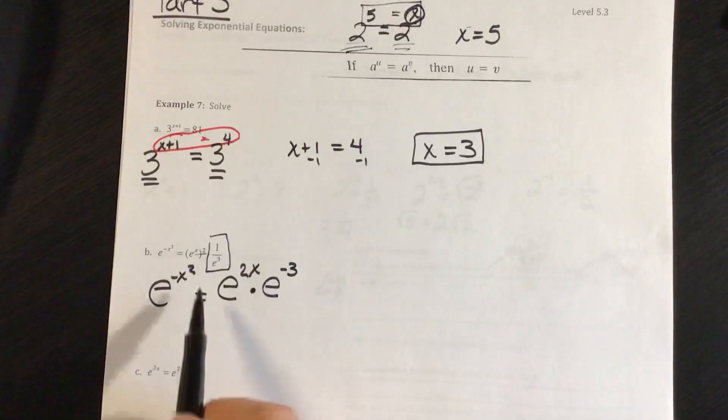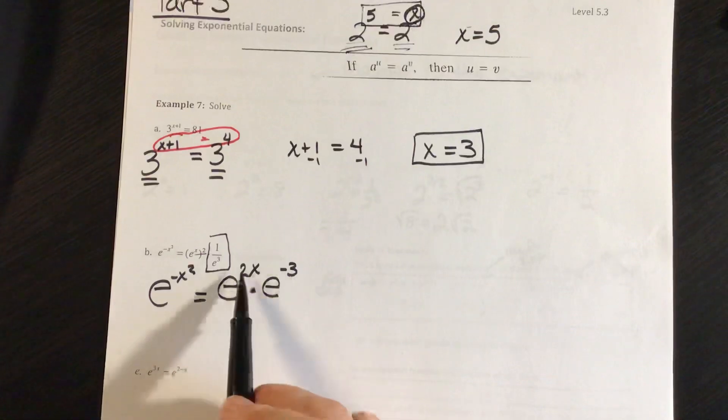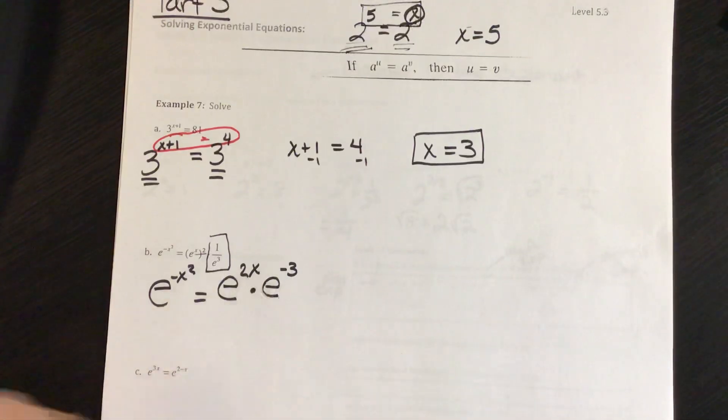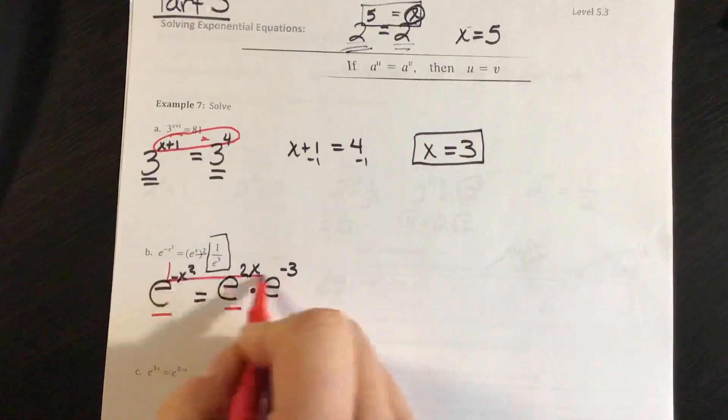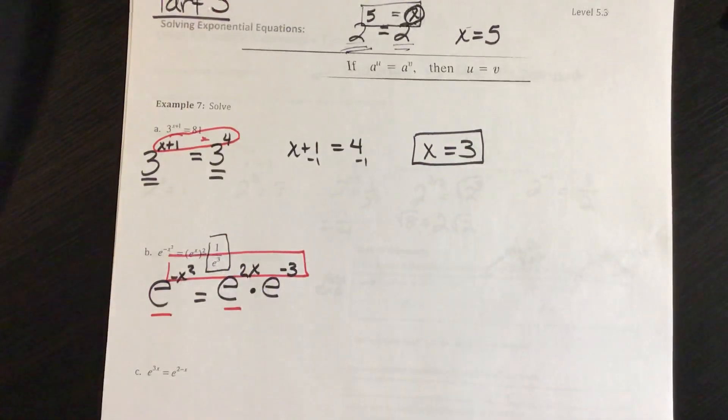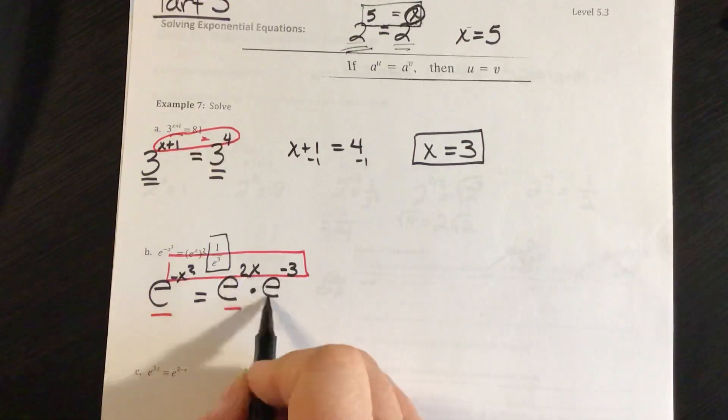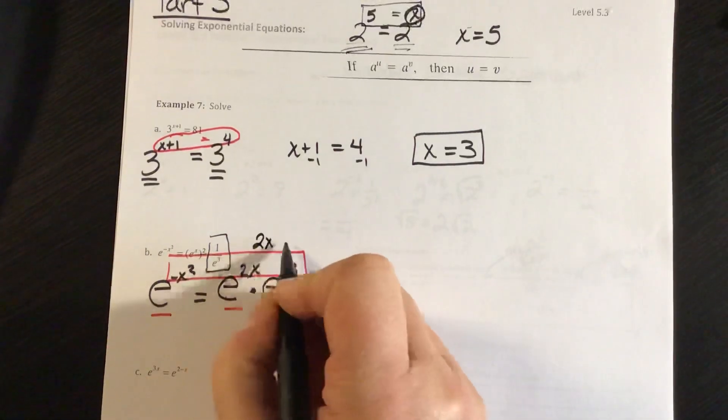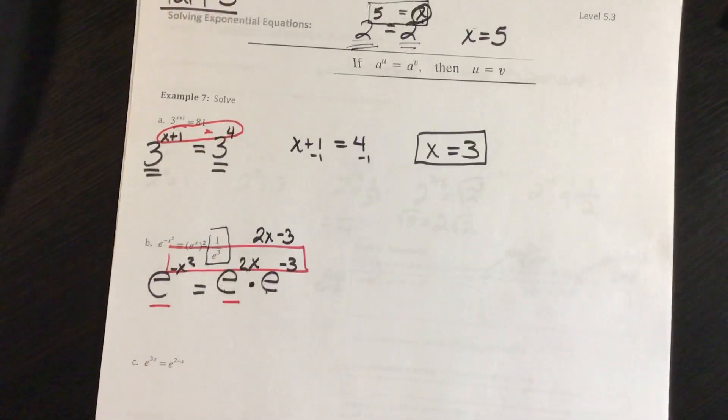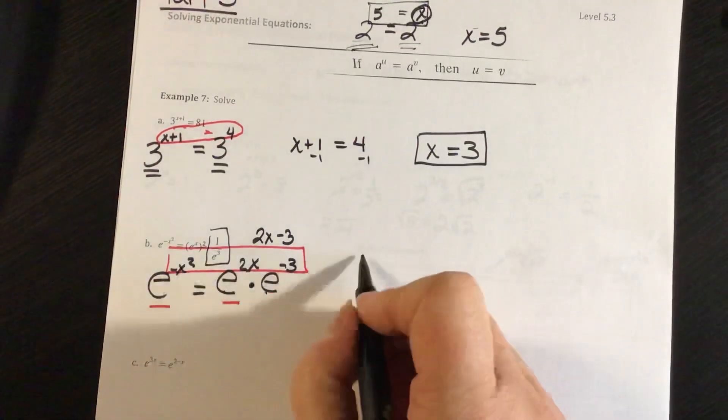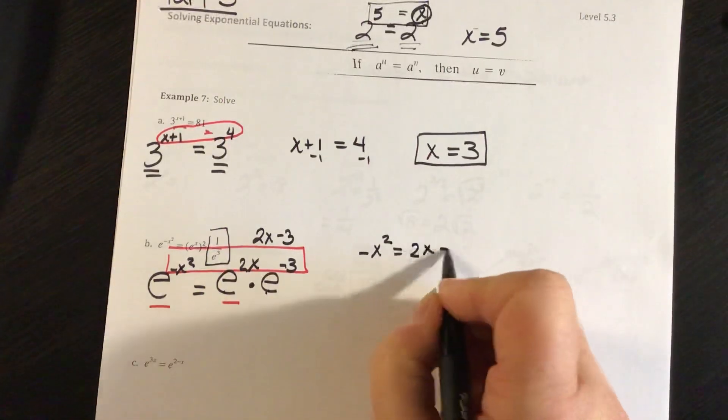All right, so here I have e to the negative x squared. And over here, I have e to the 2x times e to the negative 3. Both of my bases are e. So my exponents are going to equal. And if I combine these, remember, if I have the same base, I add and subtract exponents. So this is really 2x minus 3. So if my exponents are equal, I'm going to have minus x squared equals 2x minus 3.